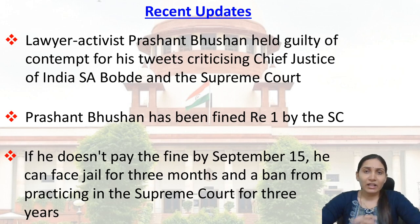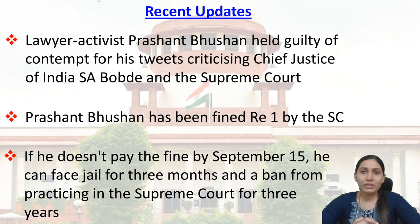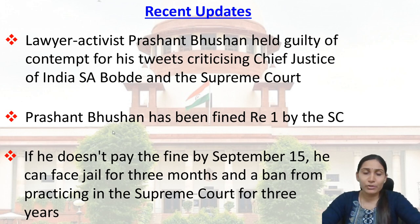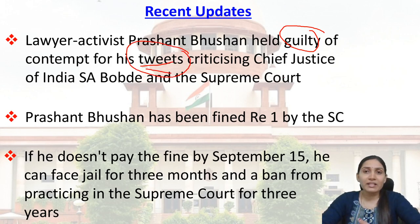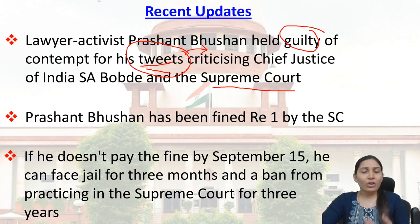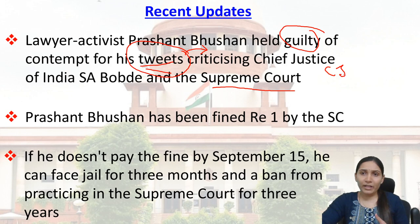Now let's come to the issue. Prashant Bhushan is a lawyer of the Supreme Court and also an activist. Lawyer-activist Prashant Bhushan was held guilty of contempt for his tweets criticizing the Chief Justice of India, SA Bob Day, and the Supreme Court. He had posted on his personal Twitter account, expressing his opinion against the Chief Justice of India, CJI SA Bob Day, and the Supreme Court.